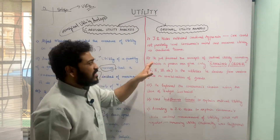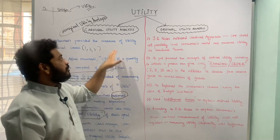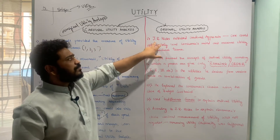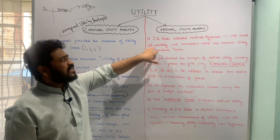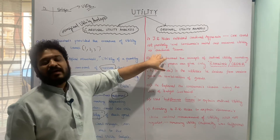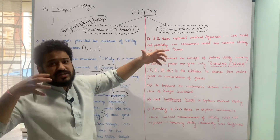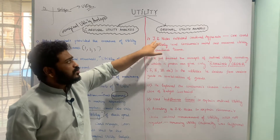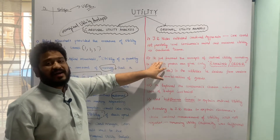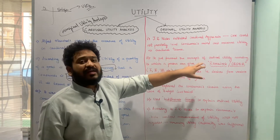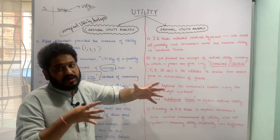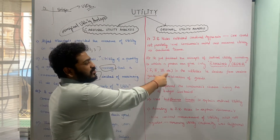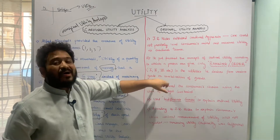Let us now move to the ordinal utility analysis. Since cardinal utility analysis requires numbering utilities using cardinal numbers, J.R. Hicks criticized this approach, saying that one cannot precisely read a consumer's mind and measure utility in cardinal terms. It is really difficult to assign a cardinal number to the utility in your mind. So Hicks put forward the idea of ordinal utility, according to which a person can only give a ranking or ordering of preferences — first, second, third, and so on — to the utilities derived from goods or combinations of goods.